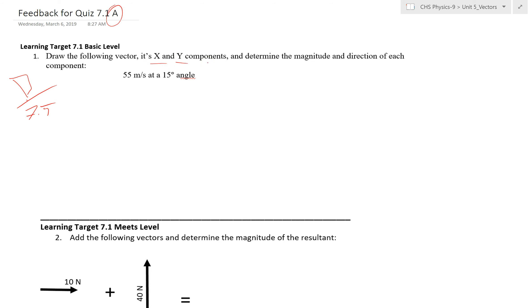We want to find the x and y components and determine the magnitude and direction of each component. So first thing you need to do is draw your vector or draw your triangle. A lot of people got this part at least partially wrong. Let's see, 15 degrees and 55 meters per second. You needed to have the arrows.